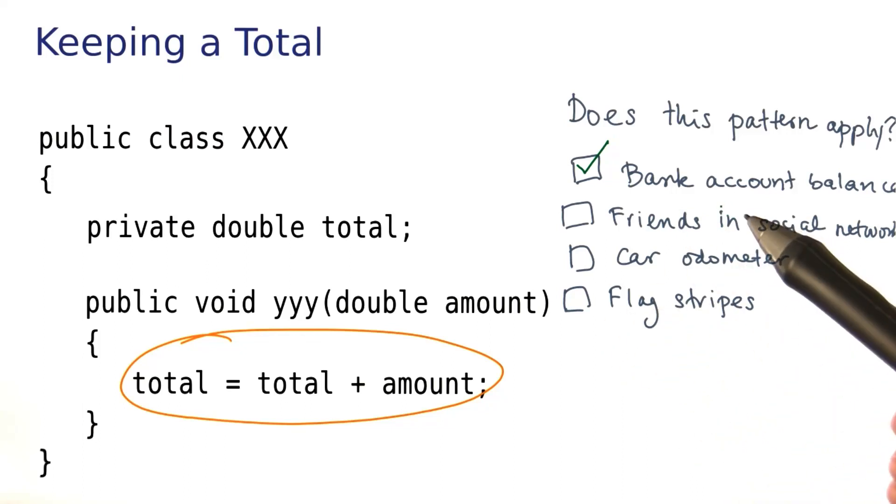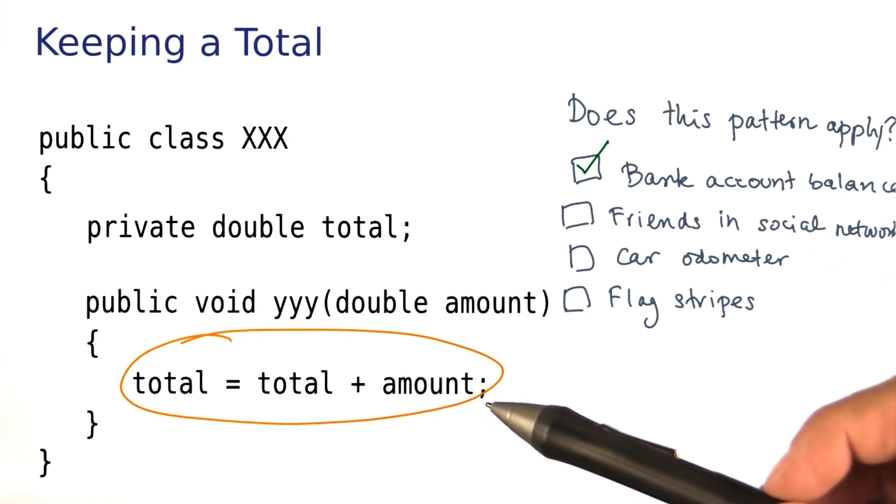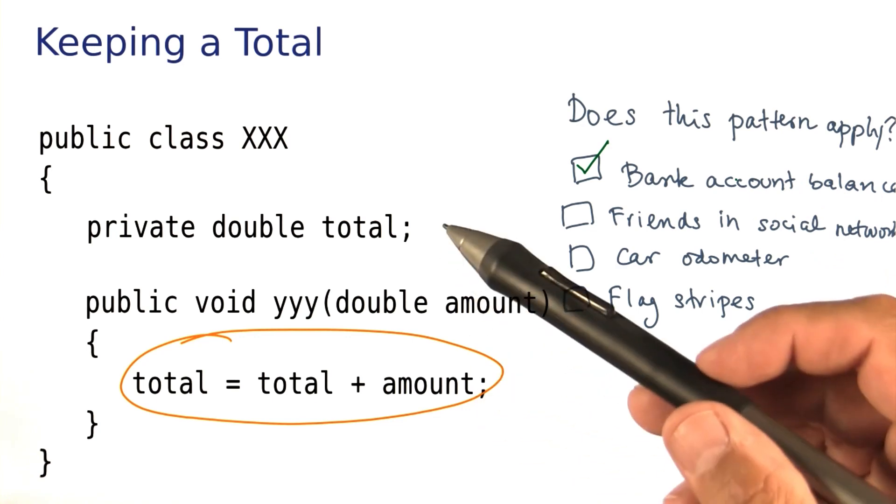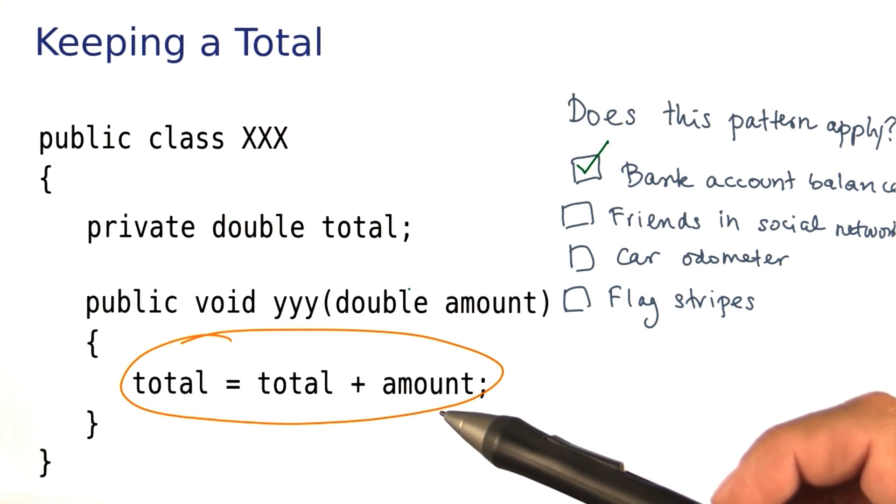With a bank account balance, a total makes perfect sense. The balance can be added to when you deposit money, and it gets smaller when you withdraw money. It's just a number that gets incremented and decremented at times.